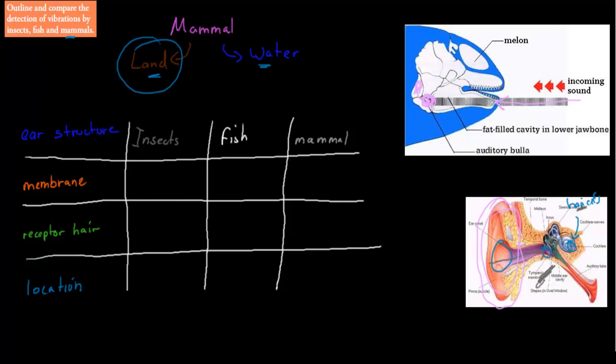So now in terms of the actual dot point: outline and compare the detection of vibrations by insects, fish, and mammals. We're just going to have a quick table in terms of showing the difference or how they're similar. First of all, do they have ear structures? Insects do not have an ear structure. Mammals do have some kind of ear structure. Fish, if they have the lateral line only, then they don't have ear structures, but some of them will have some type of ear structure, which would be the swim bladder. Some fish that have swim bladders do have some kind of ear structure, but you can see there's already a difference between if they have an ear structure or not.